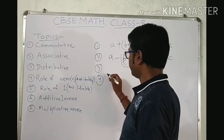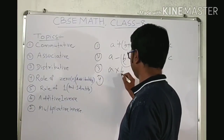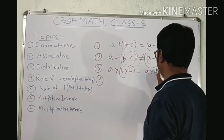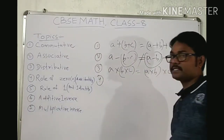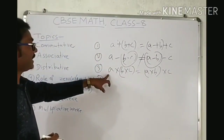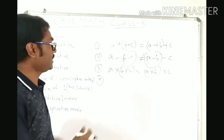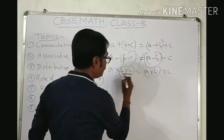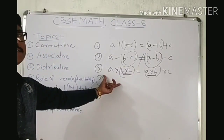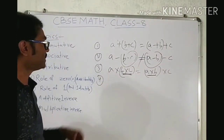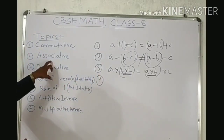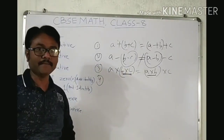Next, for multiplication: A into (B into C) equals (A into B) into C. If you take three rational numbers and associate the second to the first or first to the first, the value is the same. Multiplication is associative for rational numbers.